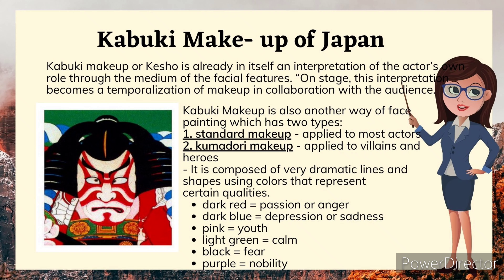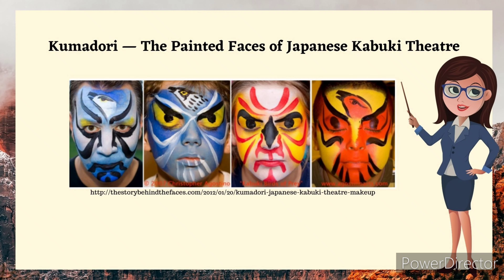Kabuki makeup of Japan: Kabuki makeup, or Kesho, is already in itself an interpretation of the actor's own role through the medium of facial features on stage. This interpretation becomes a temporalization of makeup in collaboration with the audience. Kabuki makeup has two types: 1) Standard makeup — applied to most actors. 2) Kumadori makeup — applied to villains and heroes, composed of very dramatic lines and shapes using colors that represent certain qualities: dark red equals passion or anger, dark blue equals depression or sadness, pink equals youth, light green equals calm, black equals fear, purple equals nobility.